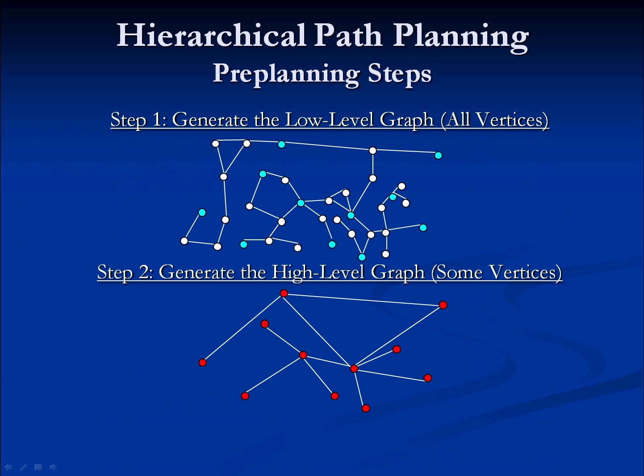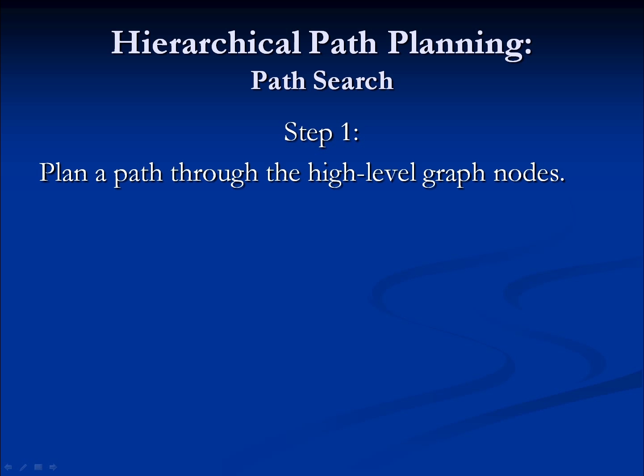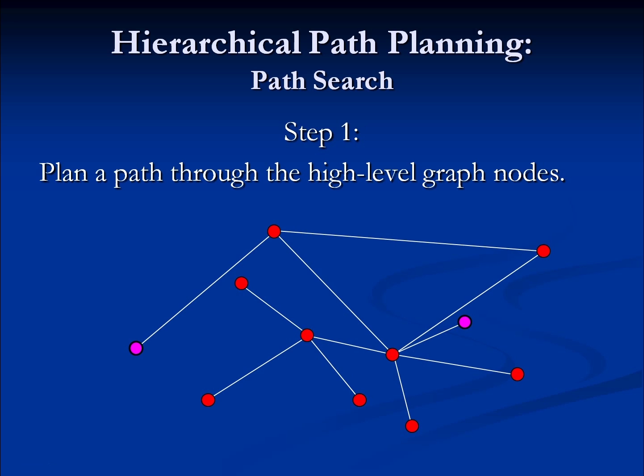All the nodes in the high-level graph also exist in the lower-level graph, but the high-level graph has fewer nodes — it's a more generic form of the low-level graph. When we want to path plan, we'll start with the highest-level graph we have. We'll find our start and end locations and do whatever path planning we need with that smaller set of vertices.